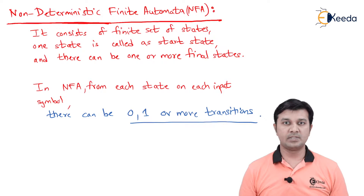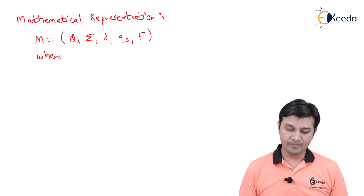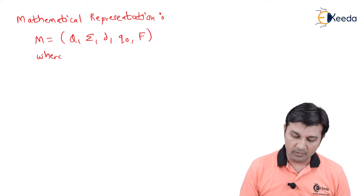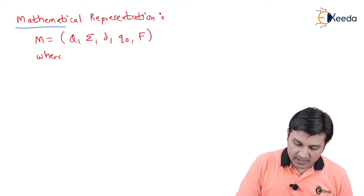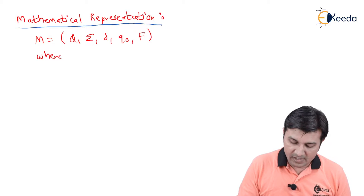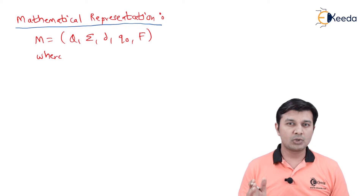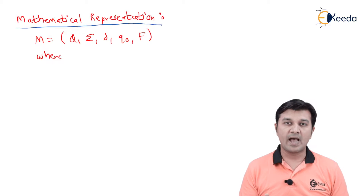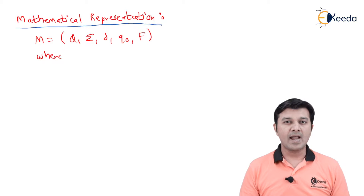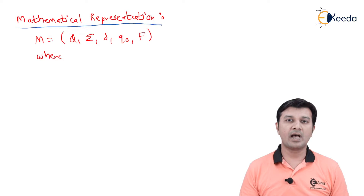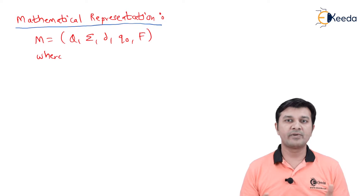Moving to the next slide, I have the mathematical representation of NFA. If you observe it closely, it says M is equal to Q, Σ, δ, q0, F — and again it coincides with that of DFA, because they are more or less the same machines with two different behaviors.